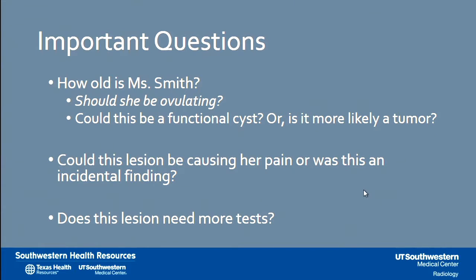My questions are: how old is she, should she be ovulating, is this a functional cyst or a tumor? If the woman is in her menstrual years, this could very well just be a functional cyst — something we almost expect to see. Could this be the cause of her pain? Why did she go to the ER? Does this lesion need more tests?